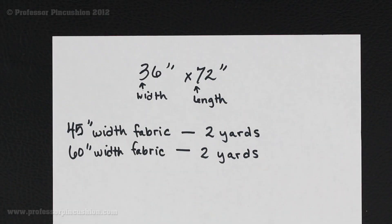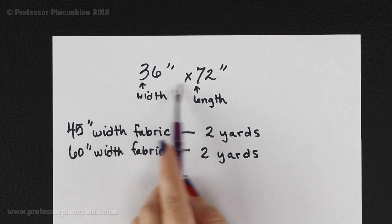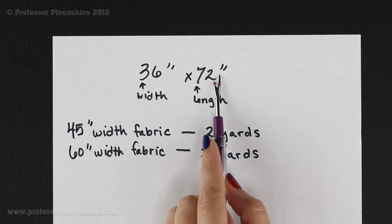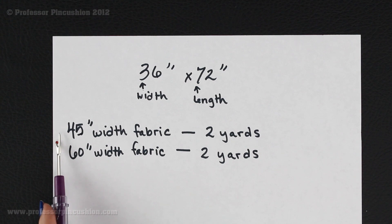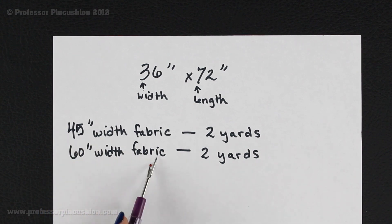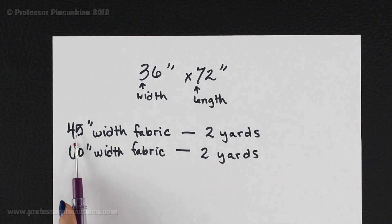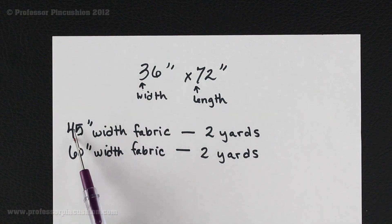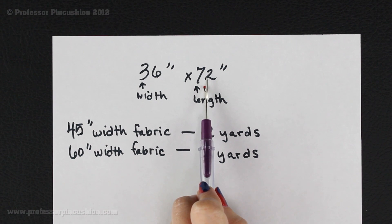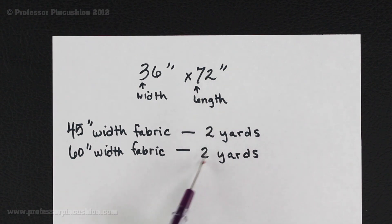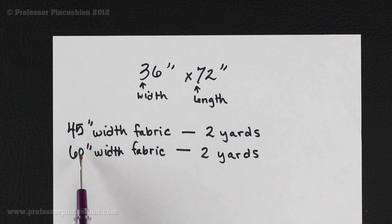Let's look at an example with a bigger measurement. Say my window width to cover is still 36 inches, but now my length is 72 inches because I want it to go all the way down to the floor. In this case, 72 inches isn't going to fit in either a 45-inch or 60-inch width. So you put 36 as the measurement fitting into the fabric width and purchase 72 inches of fabric. 72 inches equals 2 yards, so you would be purchasing 2 yards of either the 45-inch or 60-inch width fabric.